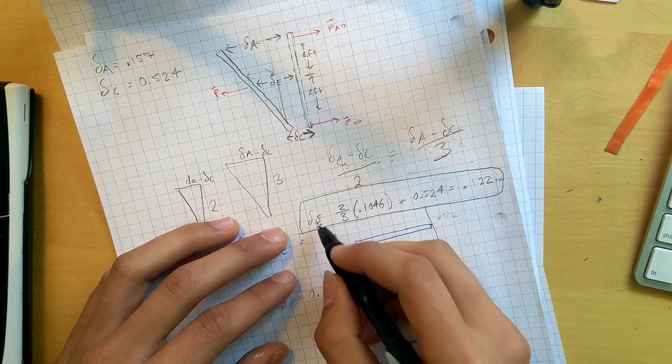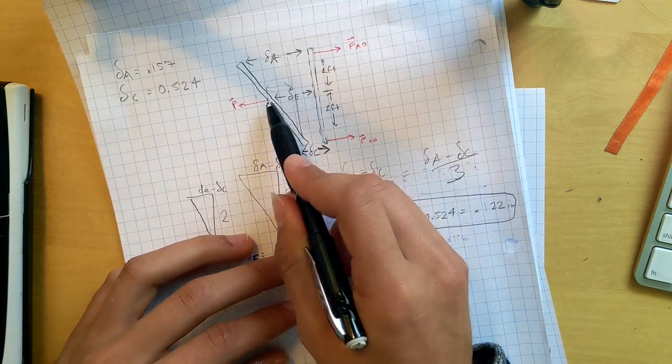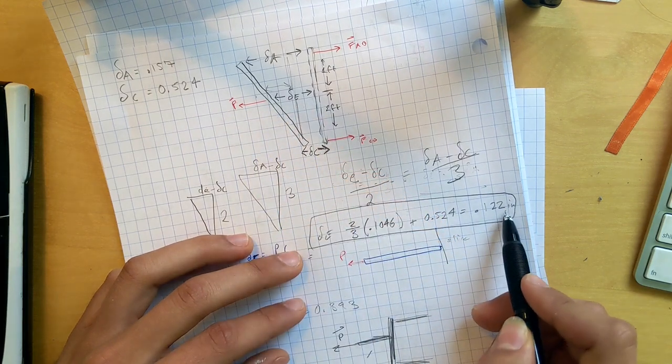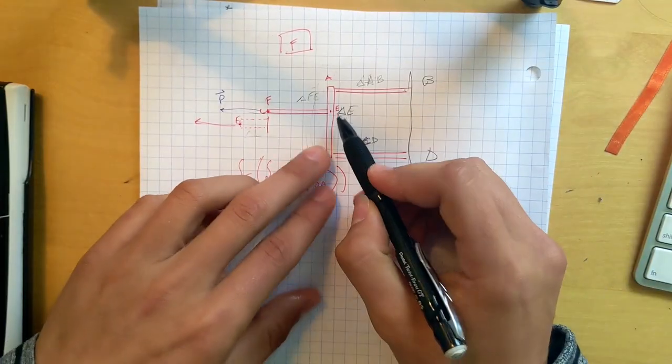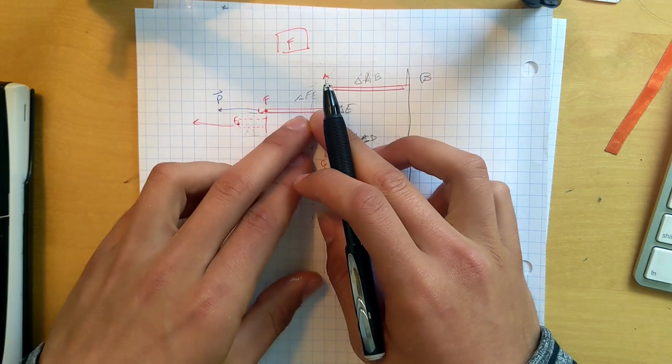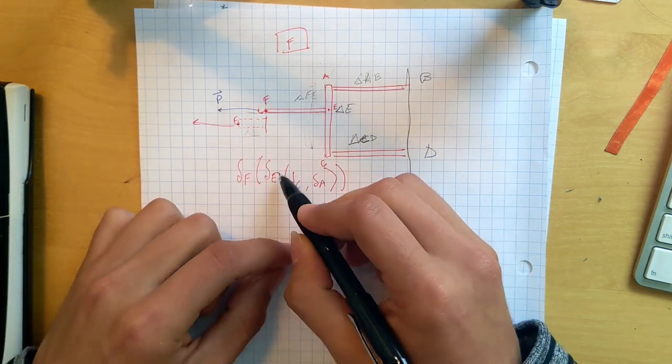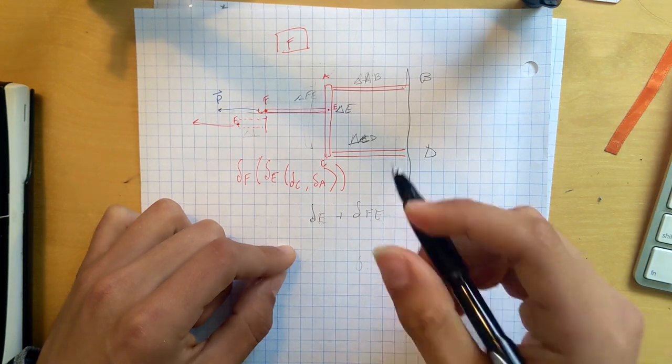So we do some rearranging and we'll find that DE is... dun-dun-dun-dun-dun. And find out that the change in length of point E, where point E ends up, where it moves to, that it's 0.122 inches to the left. Bada-da-boom! So now we know where point E has moved to. And now we just got to add that to how much the bar FE is going to stretch.